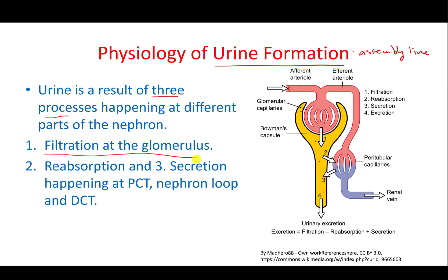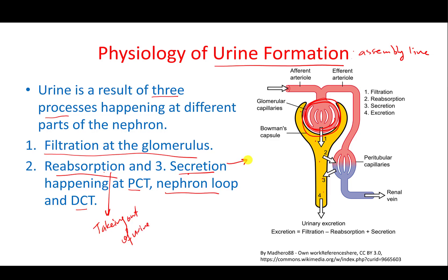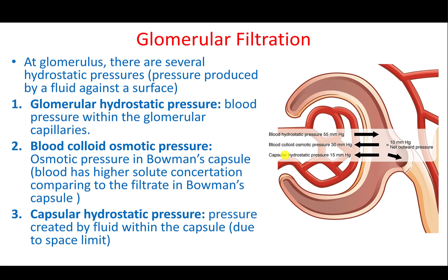The first process is filtration, which happens at the glomerulus. Then there is reabsorption and secretion, and these two processes happen at the PCT, at the nephron loop, and at the DCT. Remember: reabsorption is taking substances out of the filtrate back into blood, whereas secretion is putting substances into the filtrate.